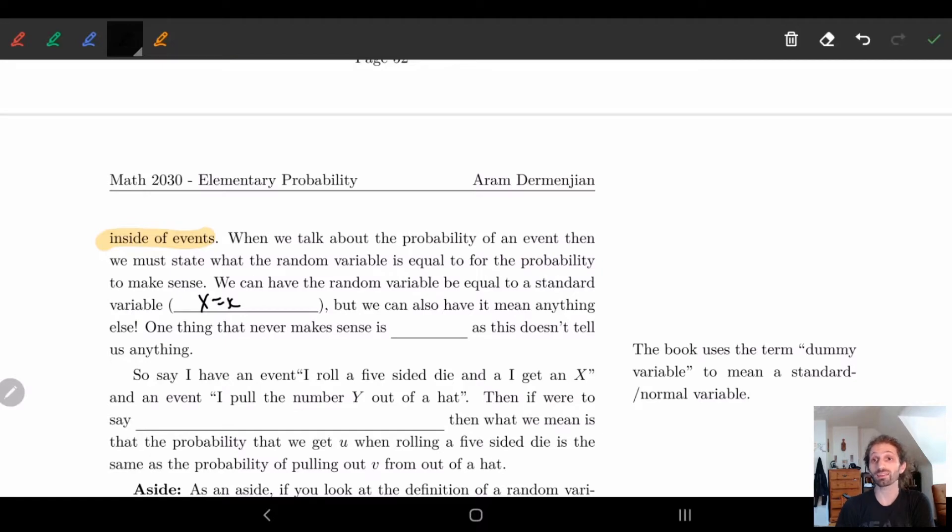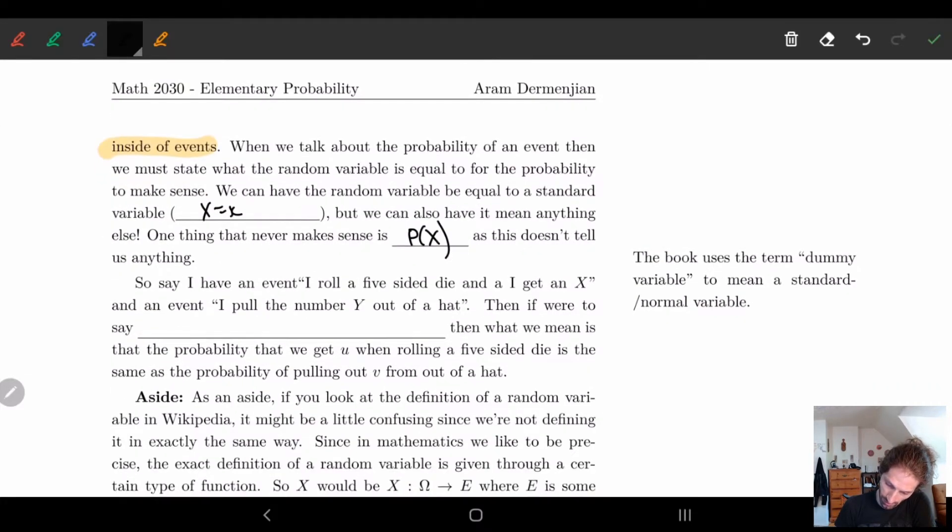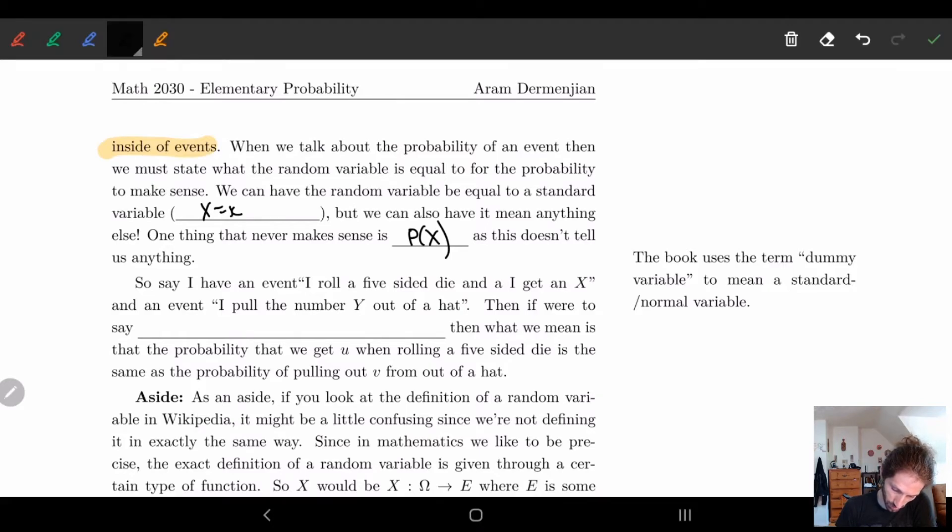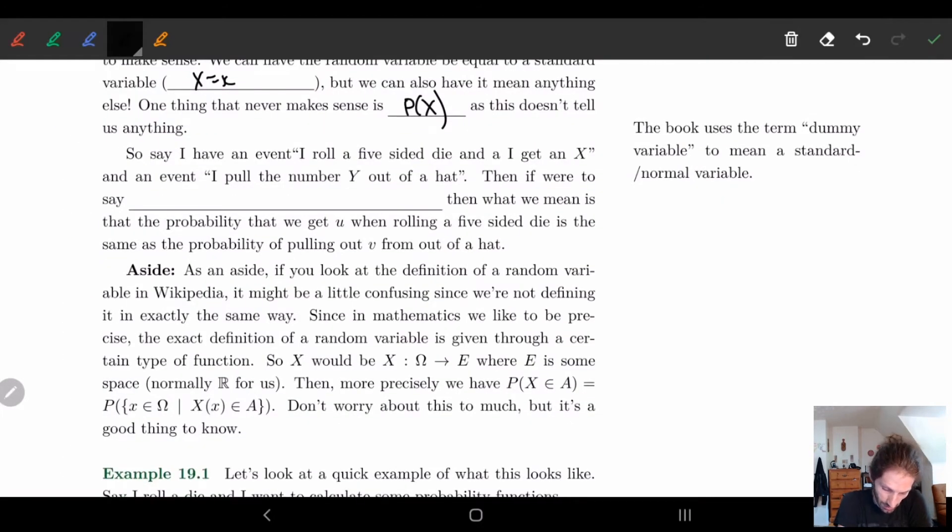One thing that doesn't make sense, though, is you'll notice that P of X doesn't make sense. This doesn't actually tell us anything. So just note that you can't really write the probability of X. This doesn't really make sense. I kind of already mentioned that the dummy variable is used in the book.